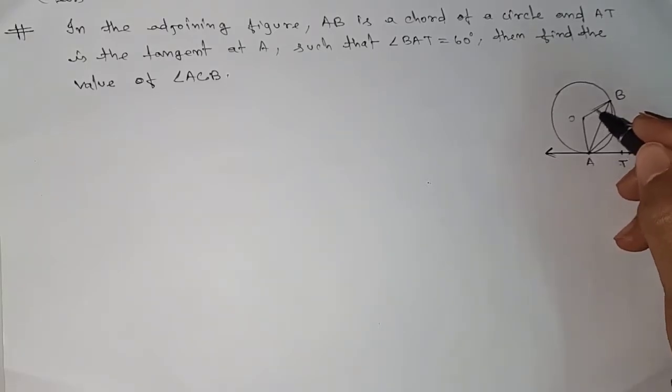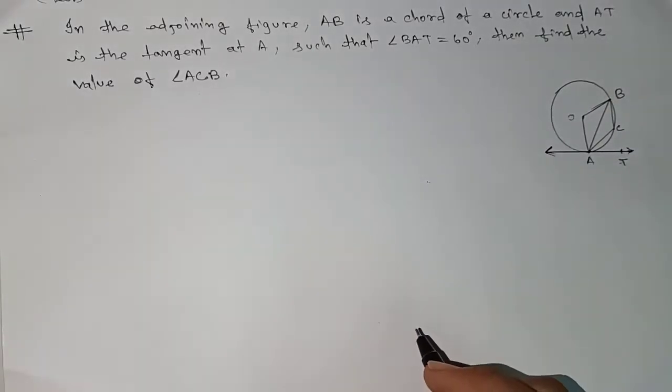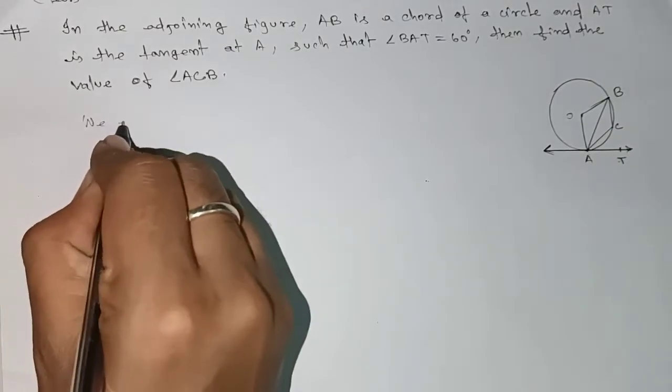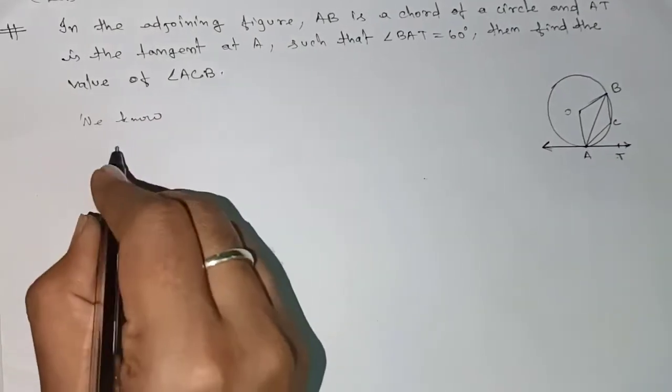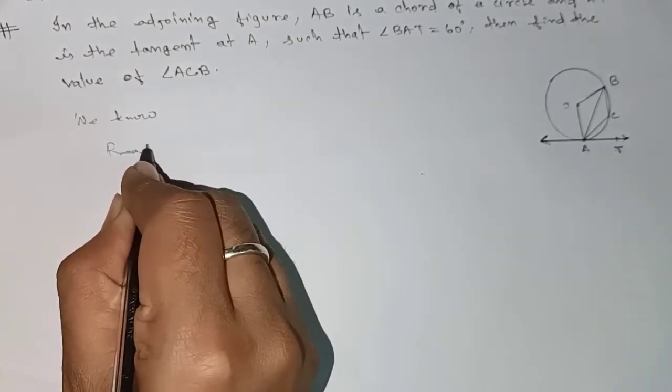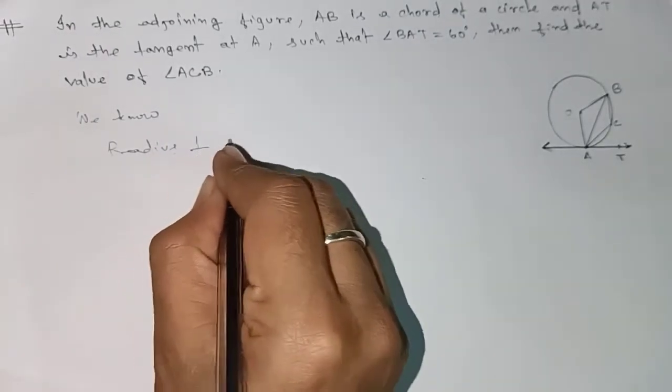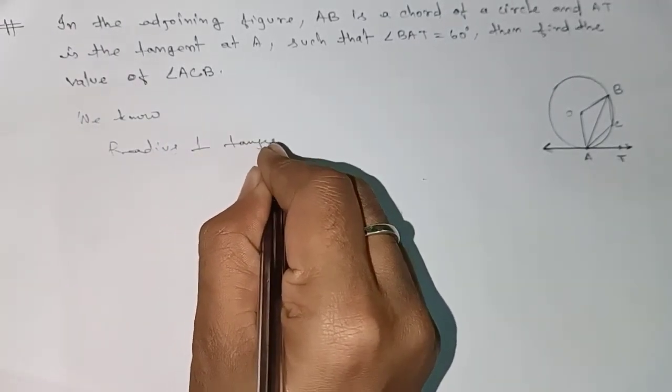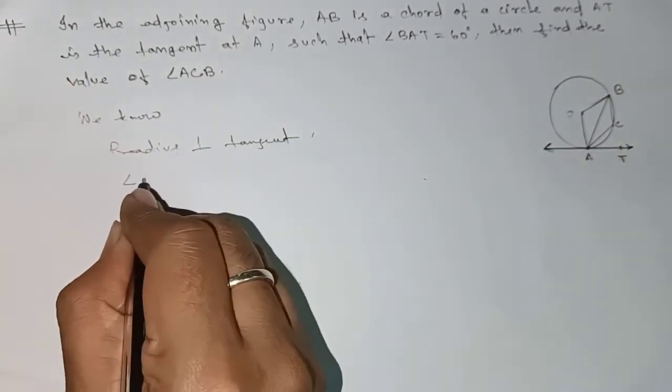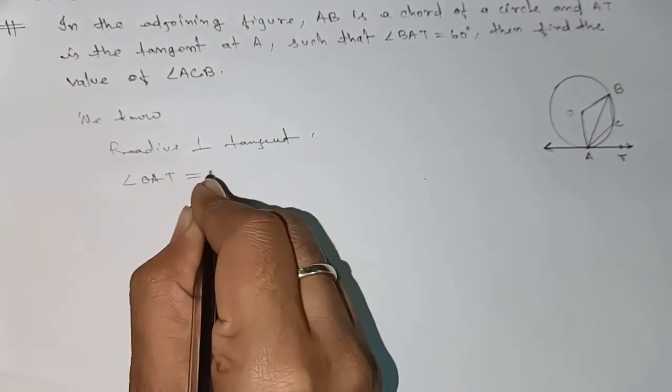If we join, we know that the radius of a circle is perpendicular to the tangent. This means we can say that angle OAT equals 90 degrees.